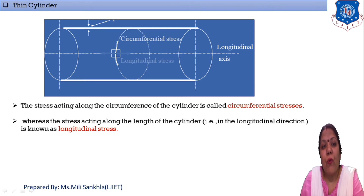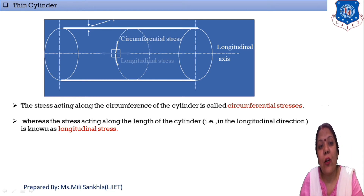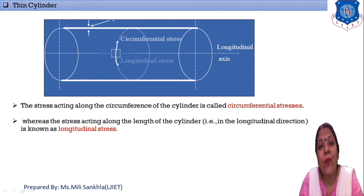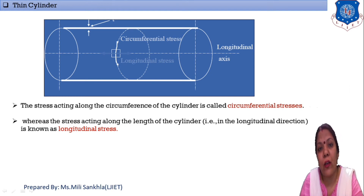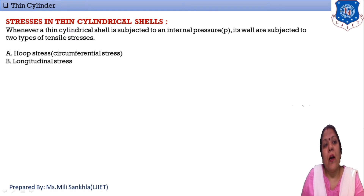Here I take a figure of a thin cylinder to explain the direction of these stresses. The longitudinal stress acts along the length or longitudinal axis of the thin cylinder. The hoop stress or circumferential stress acts along the circumference of the thin cylinder. So the first stress acts along the length and the second, hoop stress, acts along the circumference.